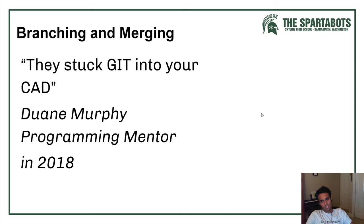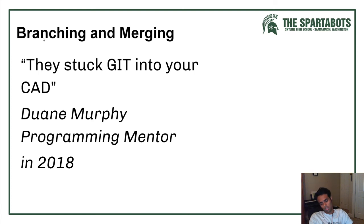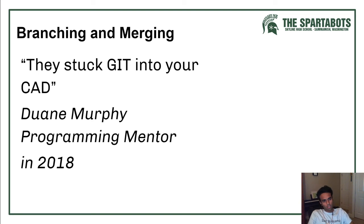Onshape allows you to create different branches of the same document. If you want to test something out but don't want to mess up the original document if it doesn't work, you can create a branch and do your tests there. If they work, you can merge that branch with the main and it becomes your main document. Otherwise you can just cut off the branch. With version control, even if someone made a mistake that crashed the document, you can easily go back to a previous version.